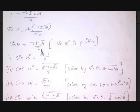Why do we take the positive root? Because we are finding sin 18 degrees, and 18 degrees lies between 0 and 90 degrees, so the sine value must be positive. The negative option (-1 - √5)/4 is negative, so we discard it. Therefore, sin 18° = (√5 - 1) / 4.